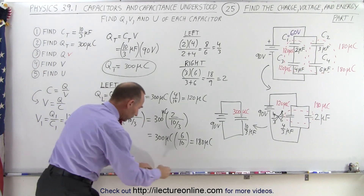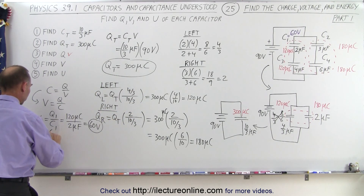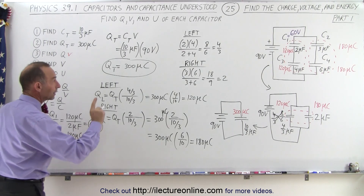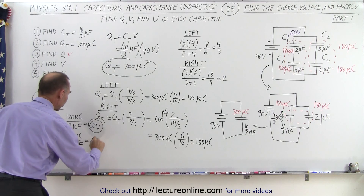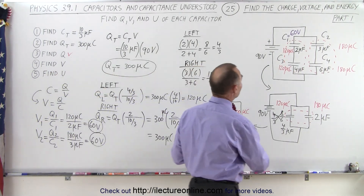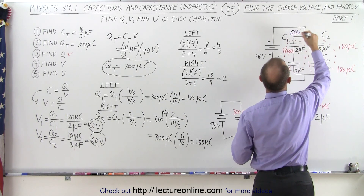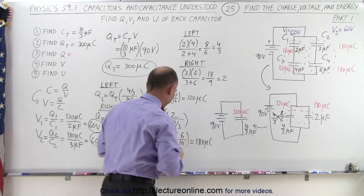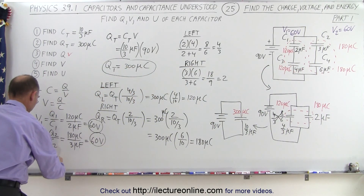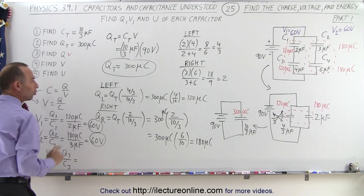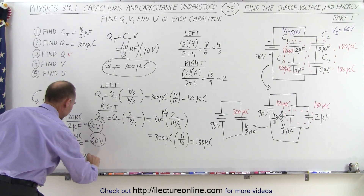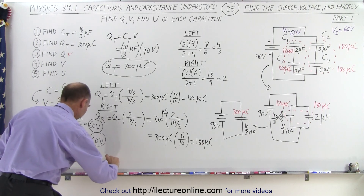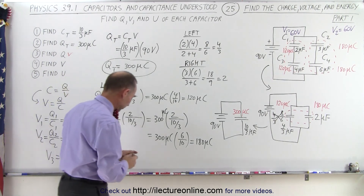On the second capacitor, V2 equals Q2 over C2: the charge is 180 microcoulombs divided by the capacitance of 3 microfarads, which also gives a voltage of 60 volts across the terminals. So V1 equals 60 volts and V2 equals 60 volts. For the third capacitor, V3 equals Q3 over C3: the charge is 120 microcoulombs divided by the capacitance of 4 microfarads, and 4 goes into 120 thirty times — that would be 30 volts across the third capacitor.